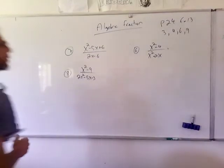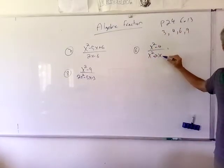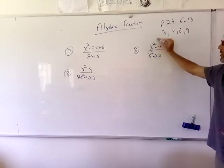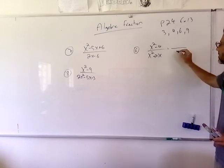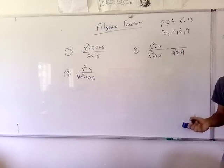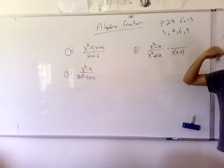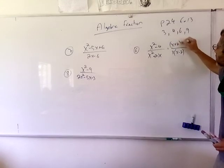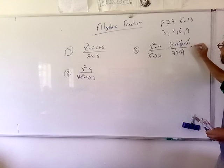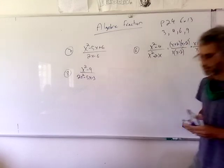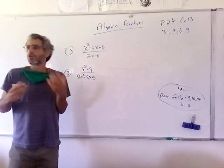Problem 6 is where things start looking like the level you'll work at this year. We factorize the top and the bottom. The bottom is easy: x times (x minus 2). For the top, we use difference of squares: (x plus 2) times (x minus 2). Now cross-cancel (x minus 2), and the answer is (x plus 2) divided by x.